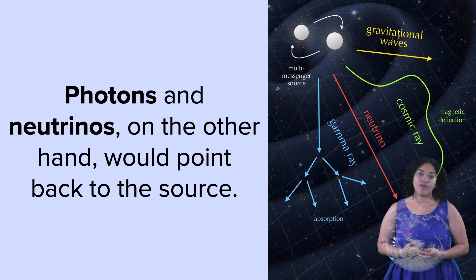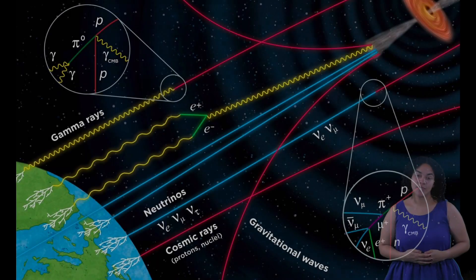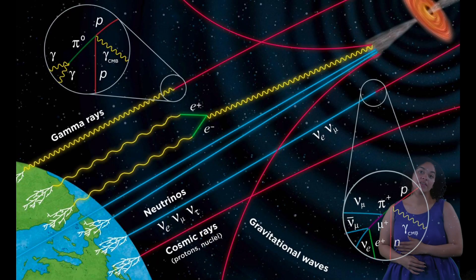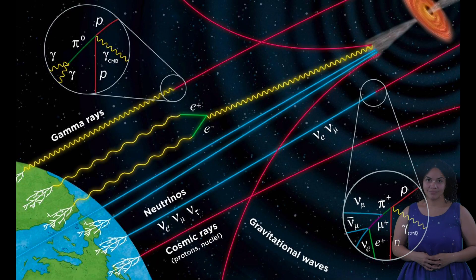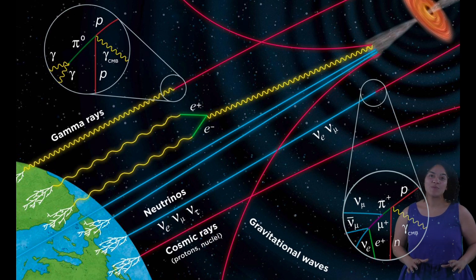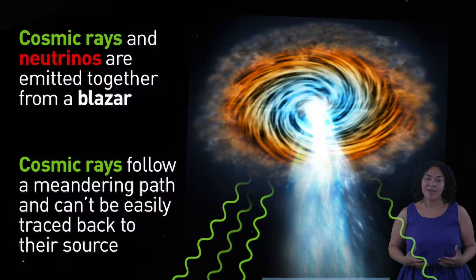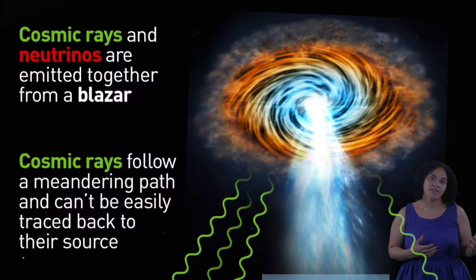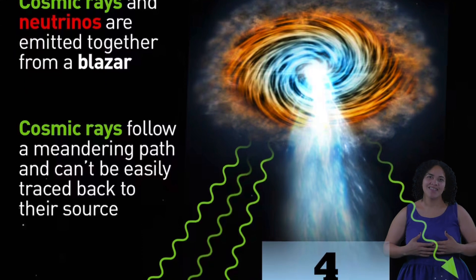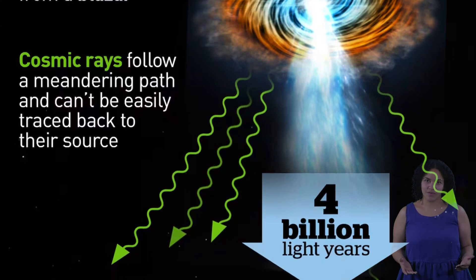However, photons are more likely to interact and undergo electromagnetic cascades as they propagate towards Earth. Moreover, photons can be produced with both electromagnetic and hadronic processes, whereas neutrinos can only be produced with hadronic processes. Thus, photons and neutrinos can provide complementary information for the sources of cosmic rays.